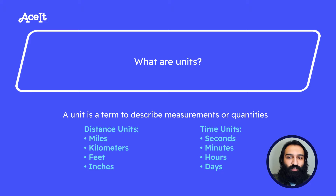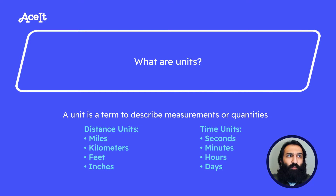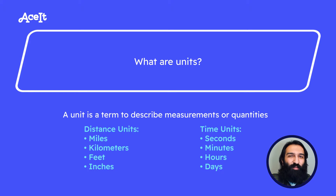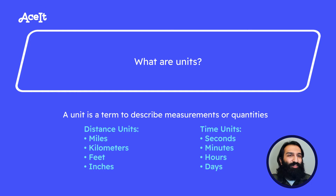Imagine if your teacher said that today's homework will take 30 to complete — 30 what? 30 minutes? 30 hours? 30 days? 30 years? We can assume your teacher probably meant 30 minutes, as 30 hours and 30 years are very unreasonable.